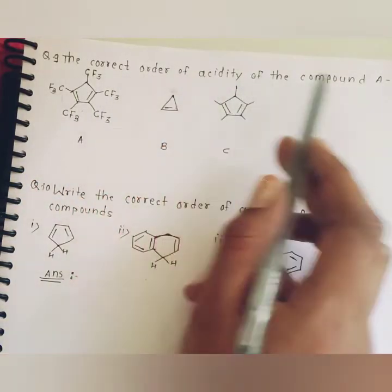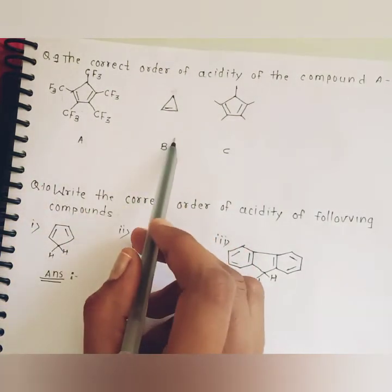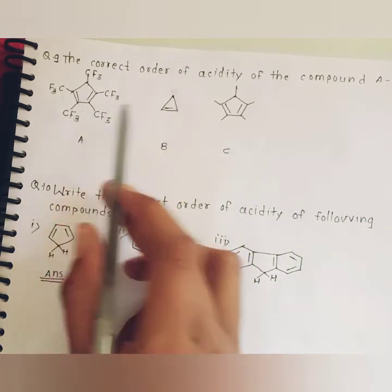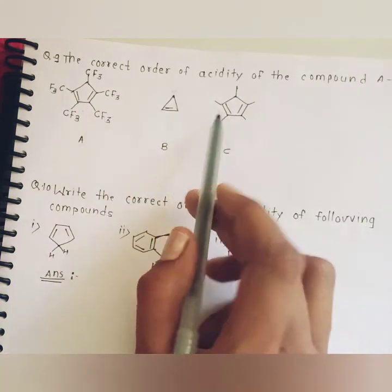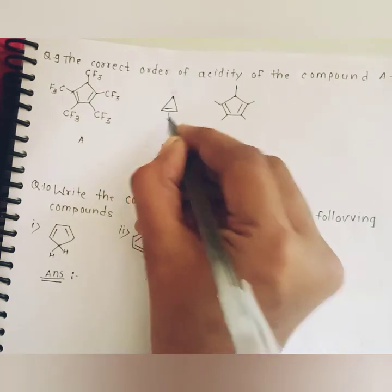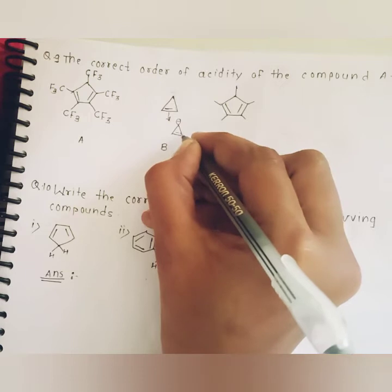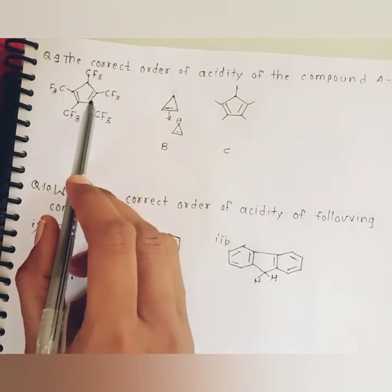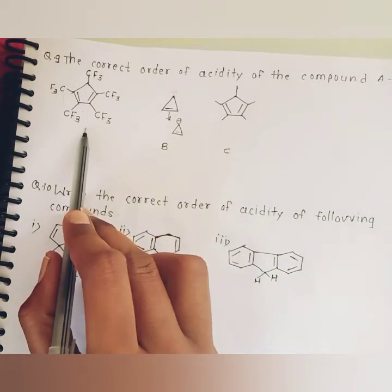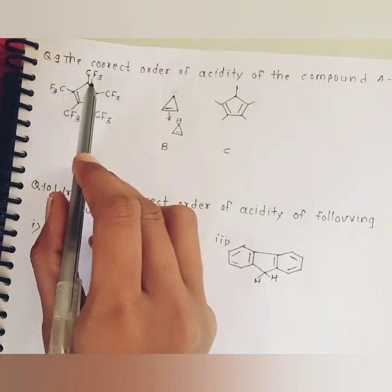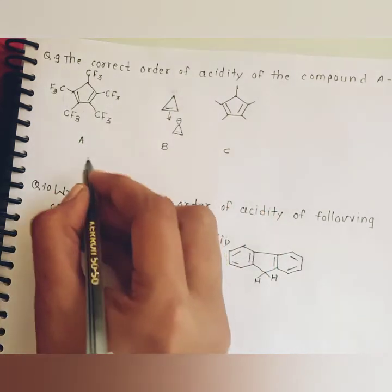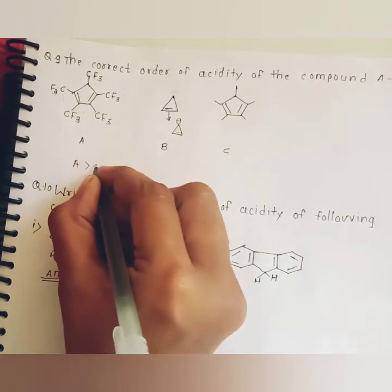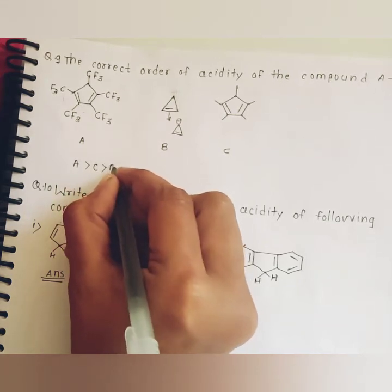Question nine: the correct order of acidity of compounds A, B, and C. A and C are acidic because after deprotonation, aromatization of the ring results. In case of B, after deprotonation it results in an anti-aromatic system — therefore B is the least acidic. Among A and C, A is more acidic because of the negative inductive effect imparting group. Therefore, the order is: A is more acidic than C, which is more acidic than B.